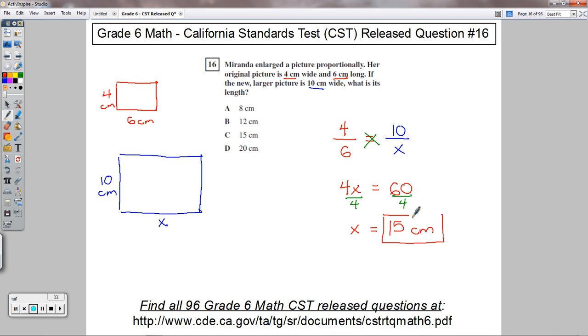Another way you could look at this problem would be to do this and say, okay, from here to here, what do I have to multiply by to get from 4 to 10? This would be times 2.5. And you'd have to do then the same thing from here to here. You'd be multiplying by 2.5. And if you multiplied 6 by 2, you'd get 12. And then another half of 6 is 3. So 12 plus 3 is 15.